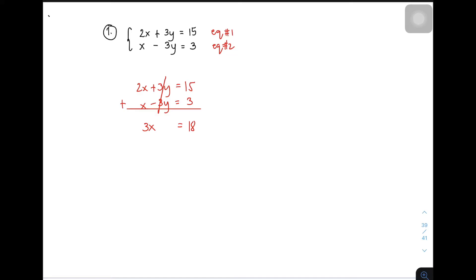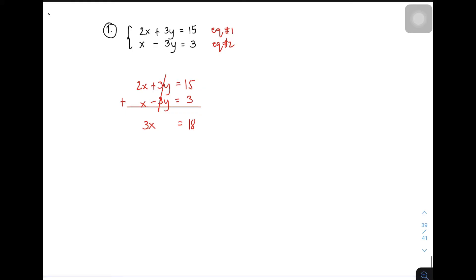This is equal to 0 or we can cancel it out. 2x plus x equals 3x. Then 15 plus 3, that will give you 18. As you can see, na-eliminate natin si variable y. The remaining variable is x. We need to solve for the variable x. Simply divide it by 3. Your x is equal to 6.